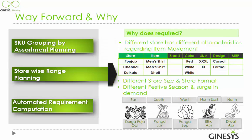Next is store range planning and why it is required. Different stores have different characteristics regarding item movement. For example, the shirt size in Punjab might be XXL while in Chennai it would be XL. An ethnic product like Dhoti in the eastern zone may not be moving in any other part of India. So in that case we have to plan particular assortments for particular stores.